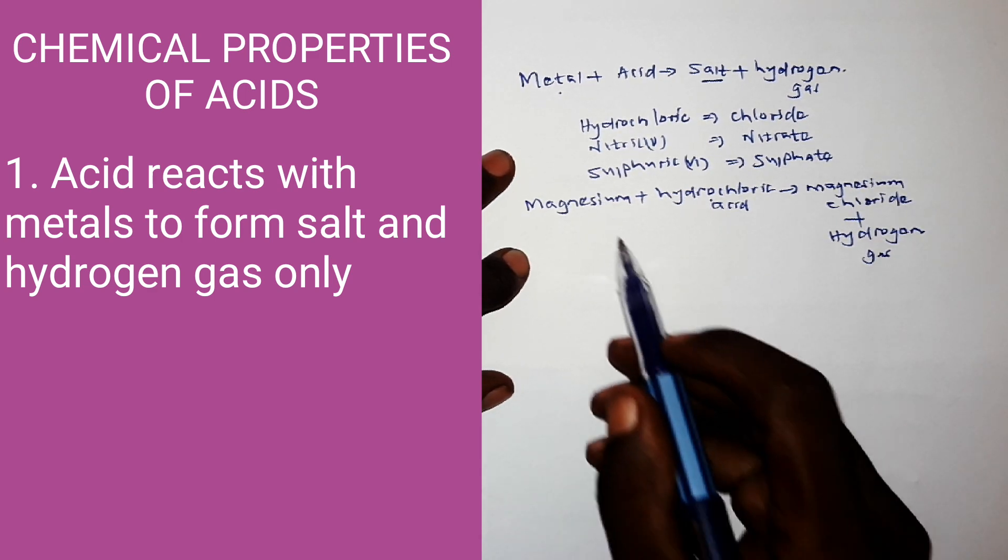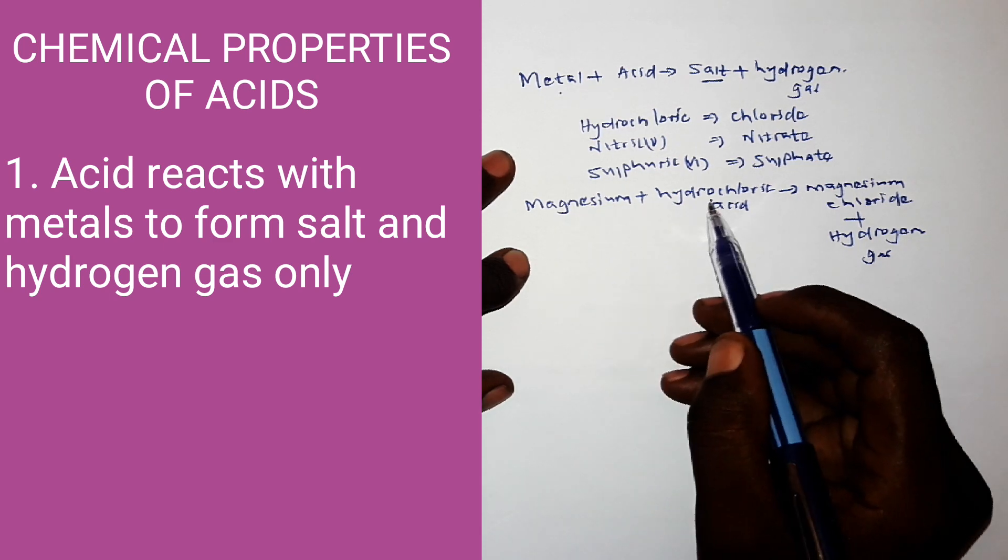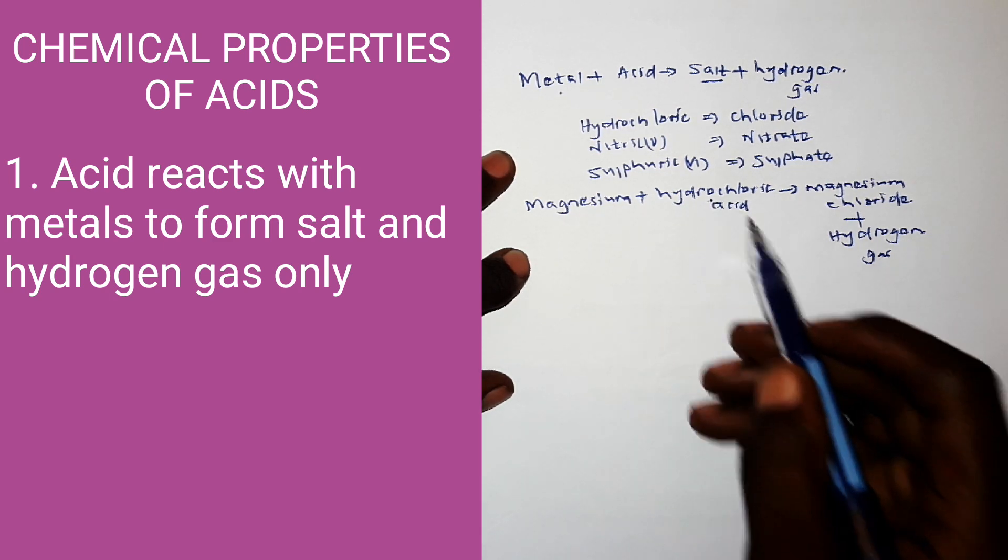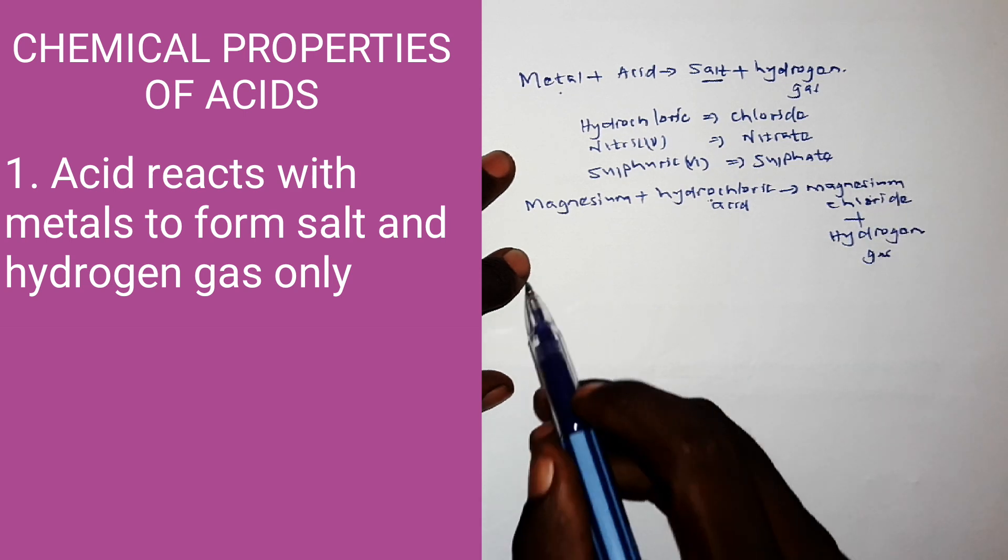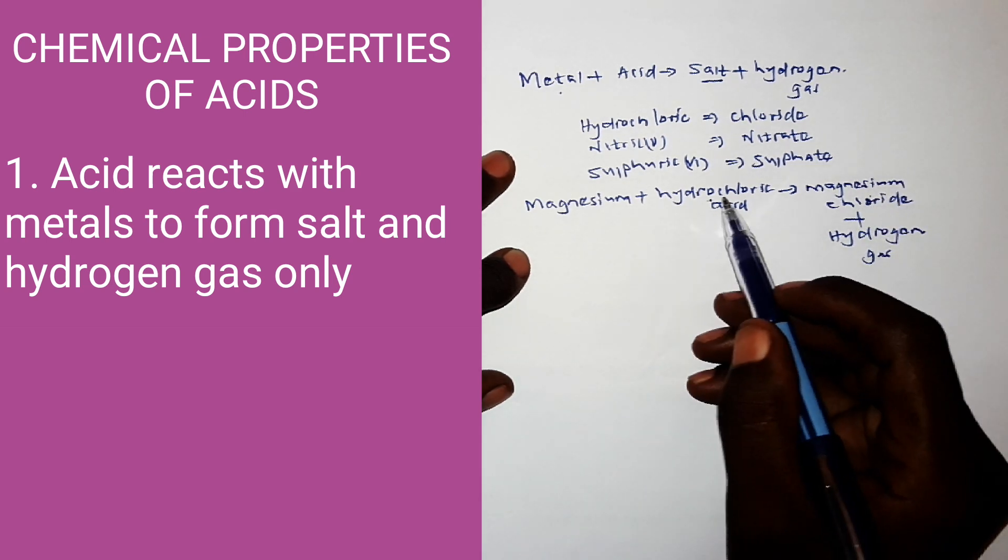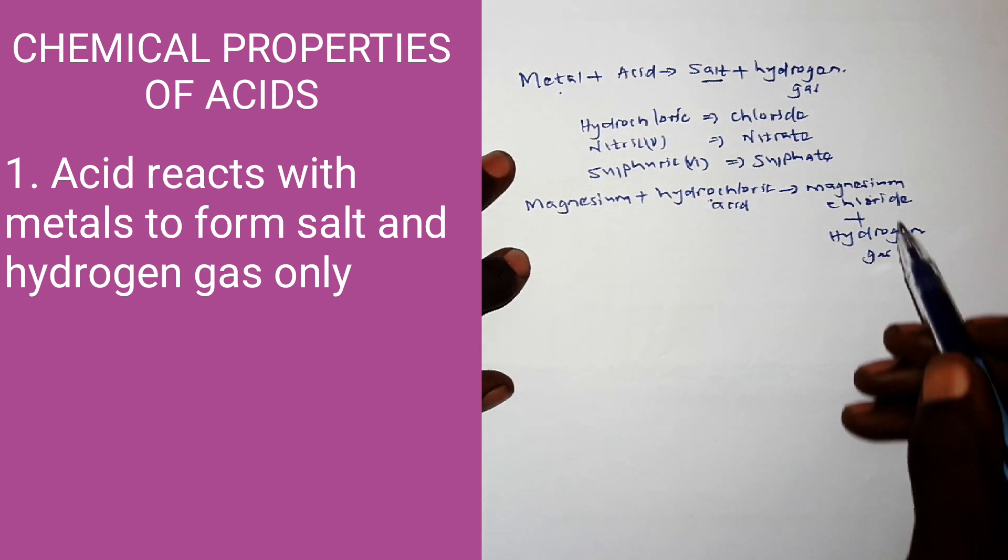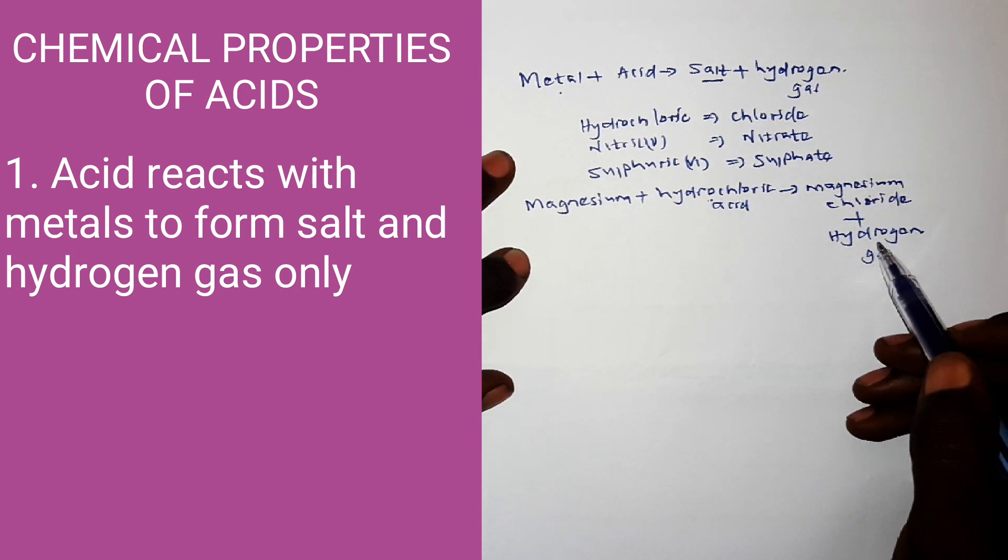Now if I'm using another example, magnesium plus nitric acid, the salt will be magnesium nitrate. If I'm changing the acid again, magnesium plus sulfuric acid, I'll get magnesium sulfate plus hydrogen gas.